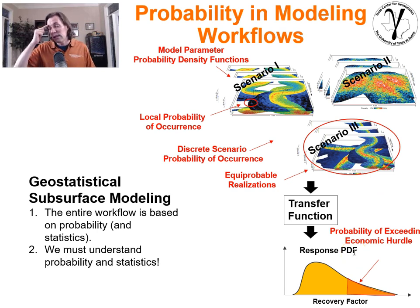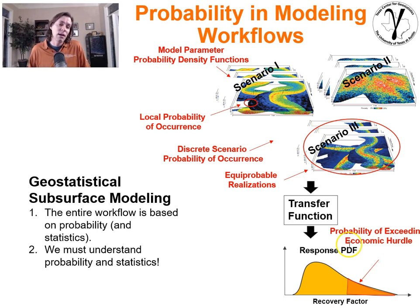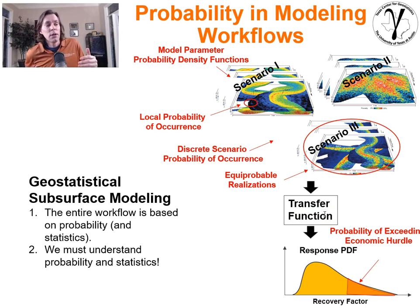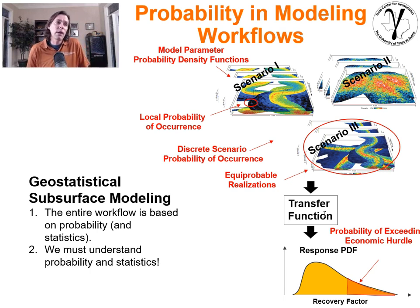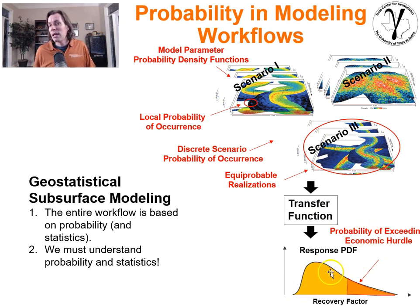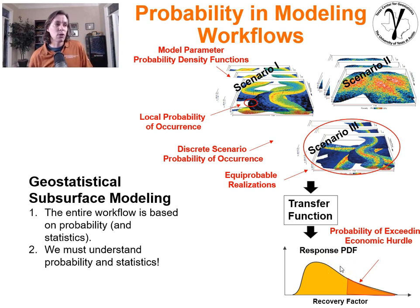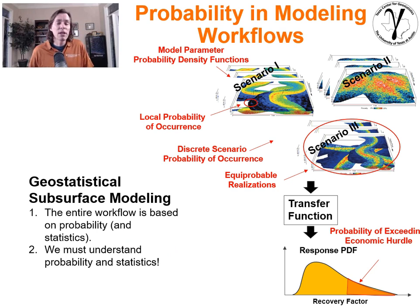We apply all of these models — that uncertainty model, the ensemble of models representing the subsurface — to our transfer function to calculate a decision criterion that can relate directly to profitability, dollars, production rates, whatever the criteria is. We would then have a resulting PDF of that decision criterion, and we would be considering the probability of exceeding a threshold, the probability of having positive economics, and so forth. The entire workflow is based on probability.